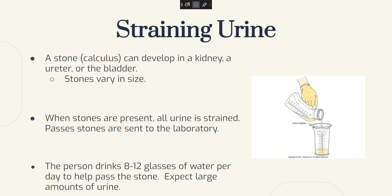A stone or calculus can develop in a kidney, a ureter, or the bladder. Stones can vary in size. When stones are present, all urine is strained, and passed stones are sent to the laboratory. Some stones are removed by medical or surgical procedures; others pass through the urine. When straining urine, the person drinks 8 to 12 glasses of water per day to help pass the stone, and you would expect large amounts of urine.